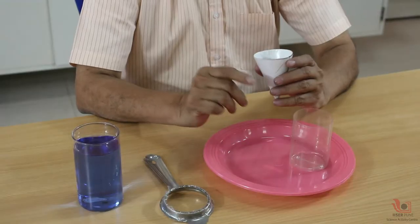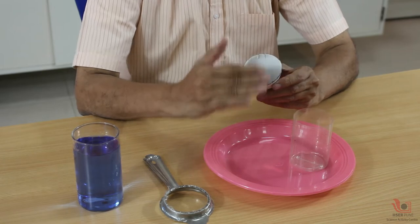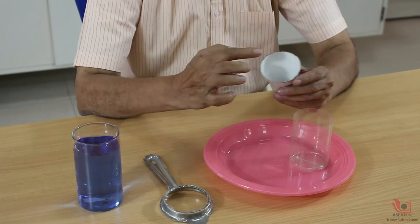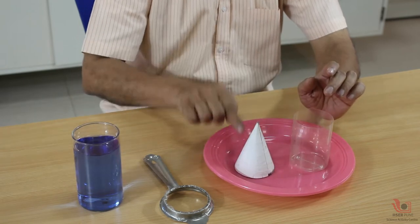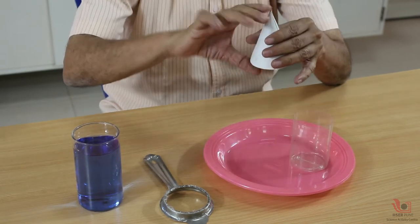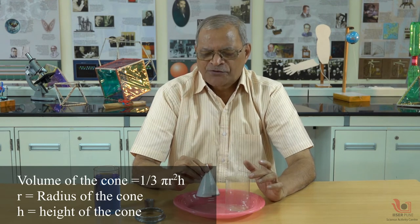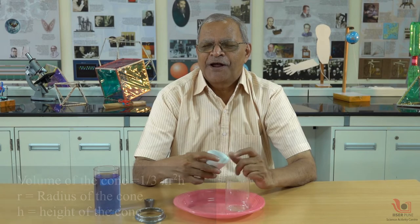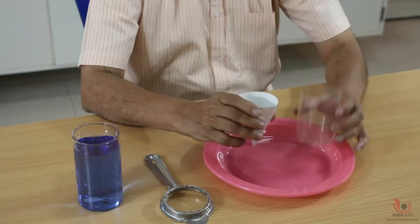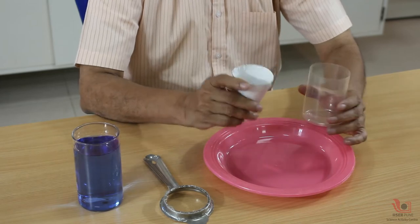I tell them: remember there is one circular cross-section, so pi and r square will be involved. The vertical height of this cone is h, and the actual formula is one by three pi r square h. This one-by-three factor can be understood by comparing the volume of the cylinder and the volume of the cone.